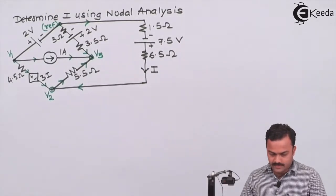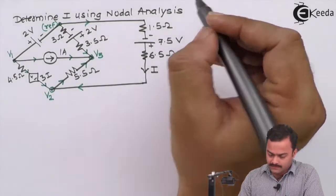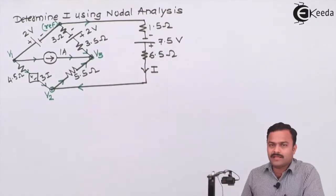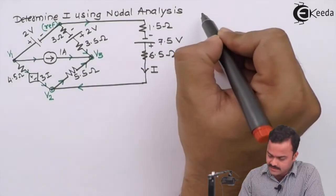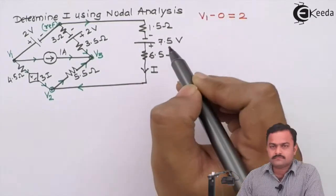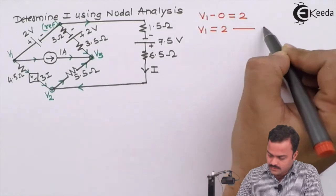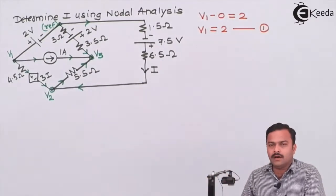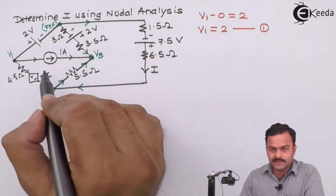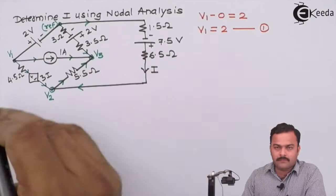If you see carefully, between node number one and the reference there is no resistance present — only a voltage source. So I can easily write v1 minus 0 equal to 2, which implies v1 equal to 2 volts. When only a voltage source is present between a node and the reference node, the potential of that node is decided by that voltage source. So v1 equals 2 volts — no need to apply KCL to node number one.